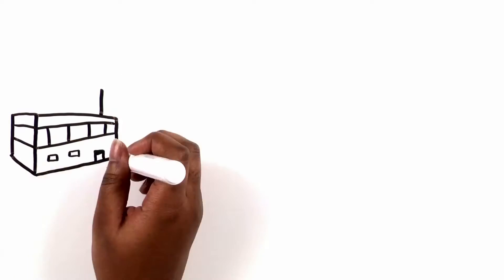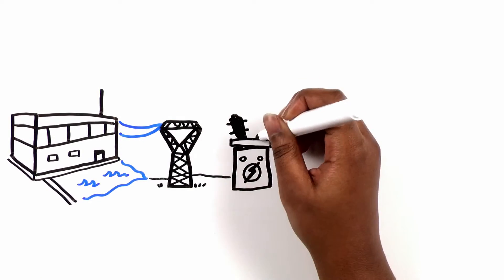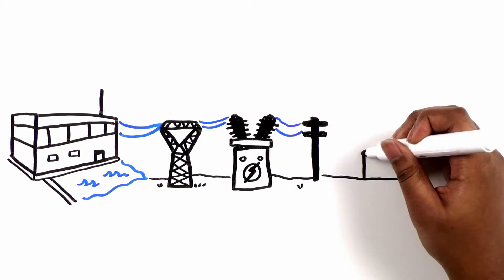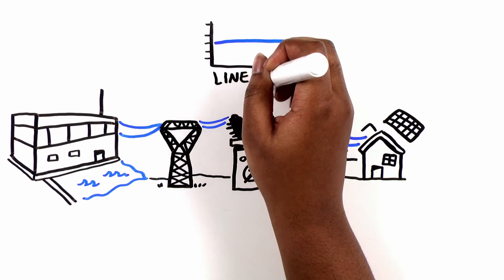When we started these programs, energy came from IID's network of traditional power sources, and customers only received energy from those sources. The grid was very linear.